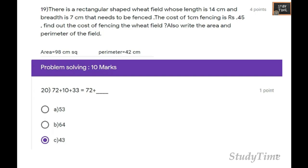First, area is 14 into 7, which is 98. For perimeter, you have to use 2 times L plus B, then you will be getting 42. Cost of fencing: 1 centimeter is 45 rupees, so 45 into 42. After multiplying, the answer is the cost of fencing the wheat field.